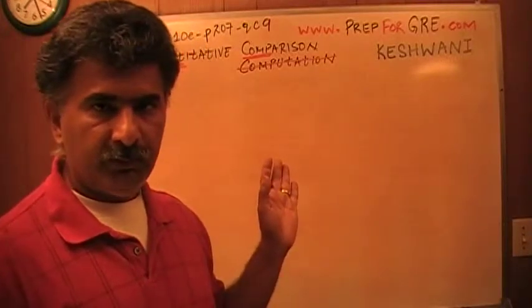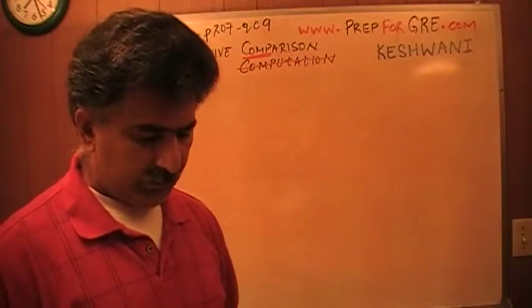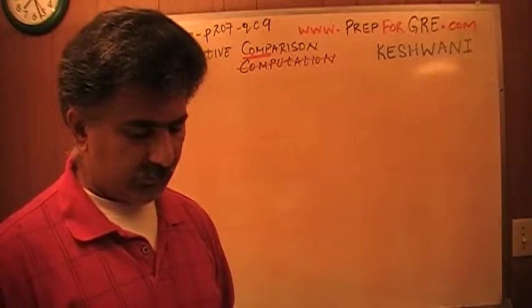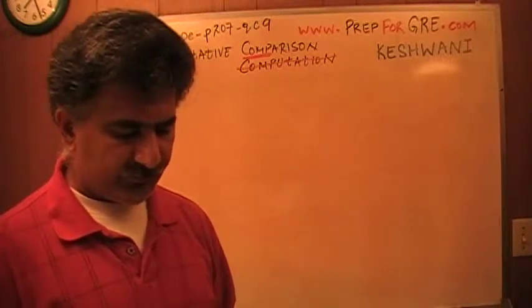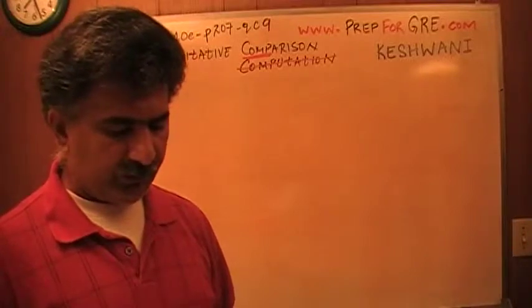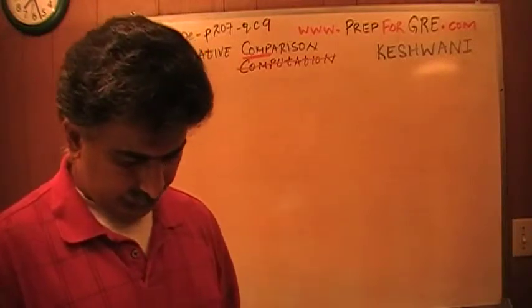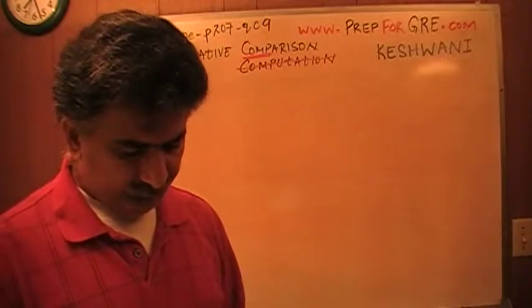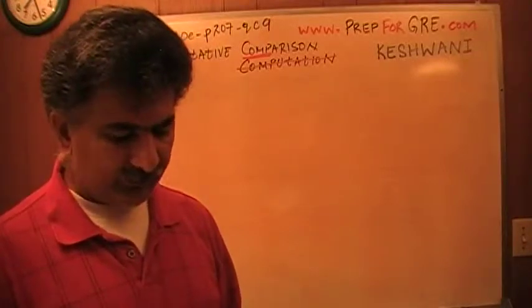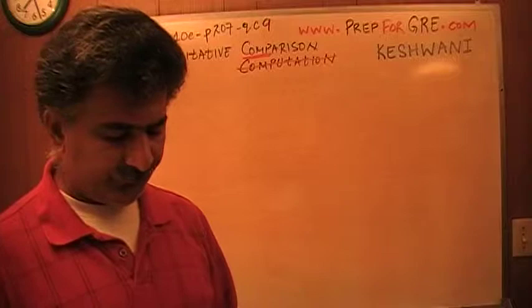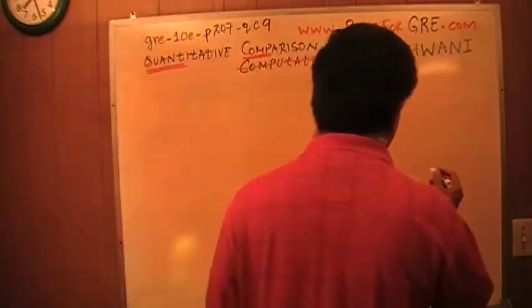Because I do not have the luxury of putting the entire problem on the blackboard. Three ships X, Y and Z are near the equator. X is 8 miles due west of Z. Alright, so let's pretend this is my Z.